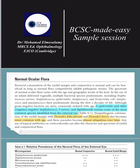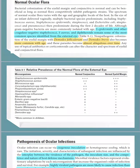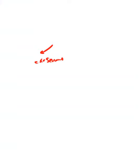Let's talk about pathogenesis. There are two routes: exogenous or endogenous. For external ocular diseases or ocular surface infections, the exogenous route is more common. Endogenous infection only occurs in cases of septicemia or pyemia in order to reach the eye.